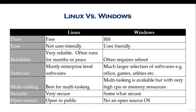Software: most of the software at the enterprise level runs on Linux. Whereas Windows has a much larger selection of software — for example, Office, games, utilities, and a lot more. Windows also offers chat and social media software.